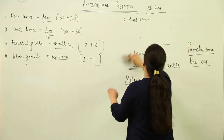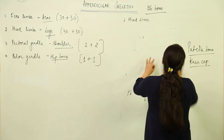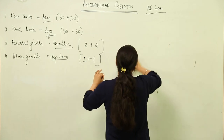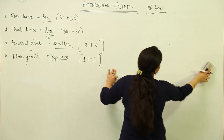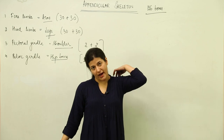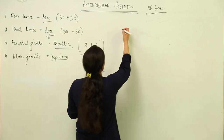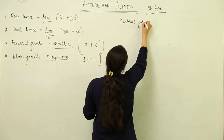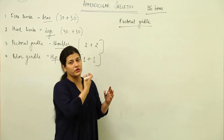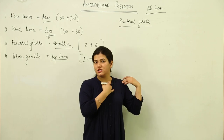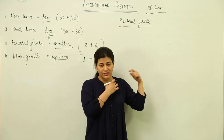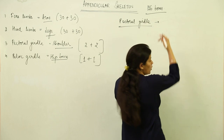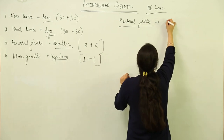Next are the girdles: the pectoral girdle and the pelvic girdle. The pectoral girdle encompasses both the dorsal (back) and ventral (front) aspects of the shoulder region. The pectoral girdle has four bones in total, but we study one half since both sides are identical. That half contains two bones: the clavicle — the beauty bone or collar bone, a long curved bone — and the scapula.